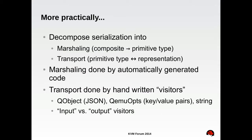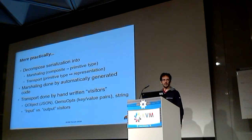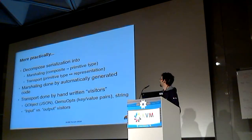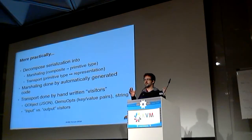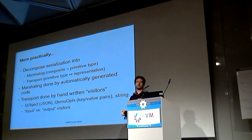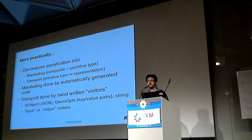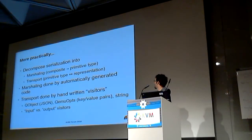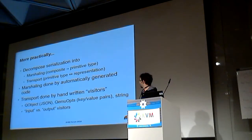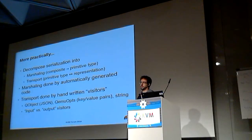What it means in practice is something not hard to explain but really effective. QAPI decomposes serialization of a C struct or a C type into two steps: marshaling — which means taking something complicated, a composite type, and decomposing it into primitive types with some structure around them — and then transport, which means going from the primitive types to the representations and back. Marshaling is very nicely done by automatically generated code. Transport is done by hand using visitors. We have various kinds of visitors — QObject, QMOops, StringVisitor — and many things you can transport QAPI types on, with input and output visitors for the two directions.